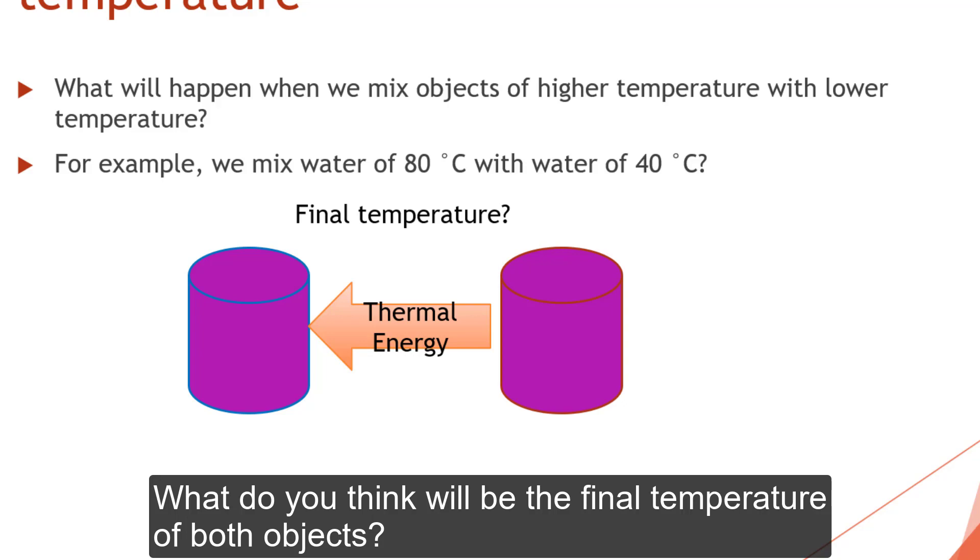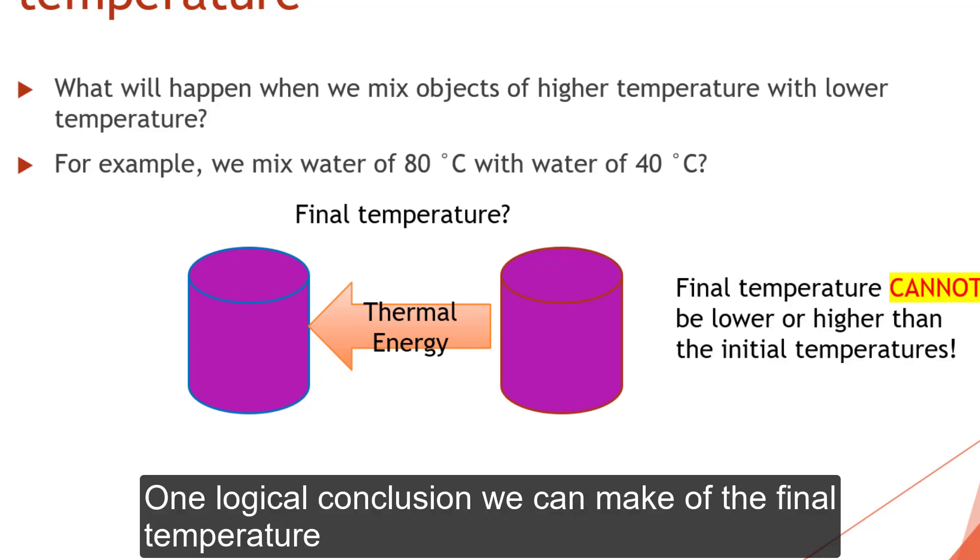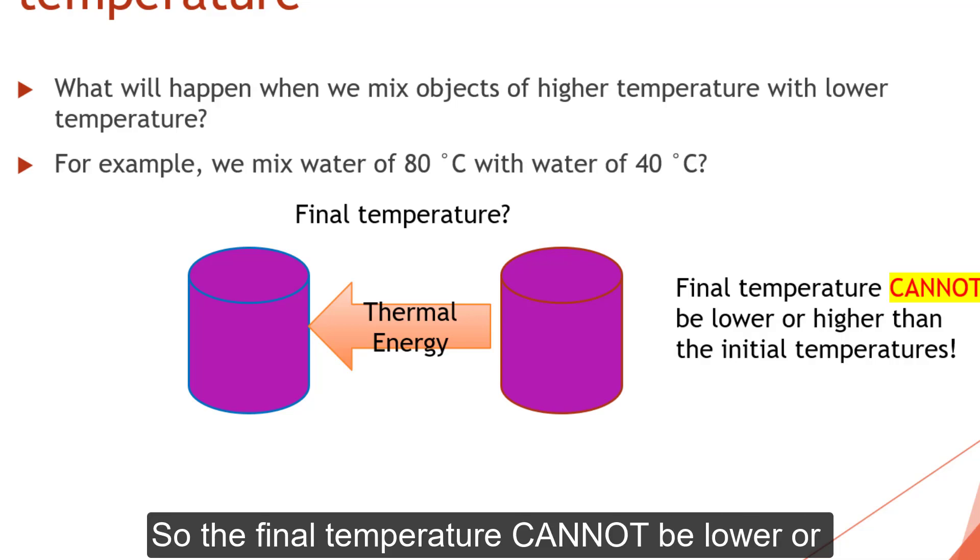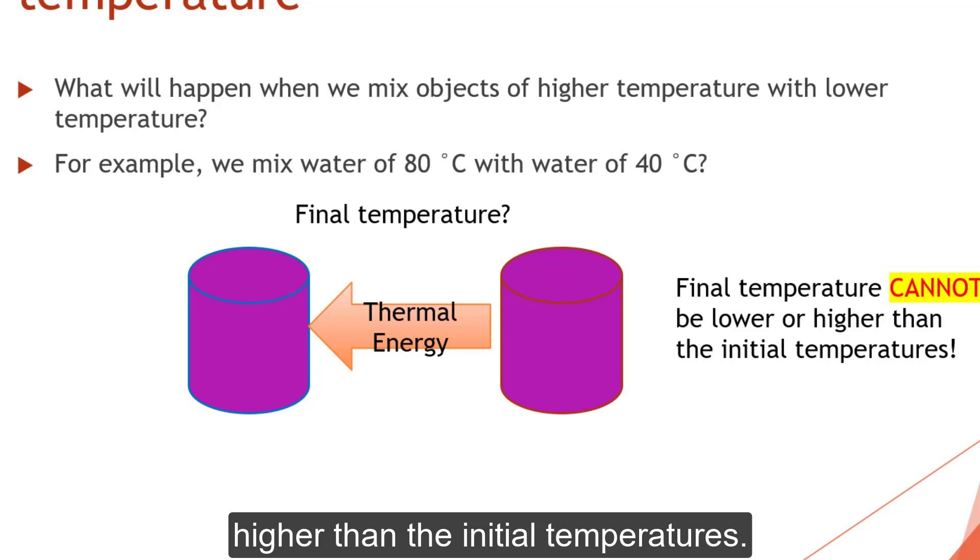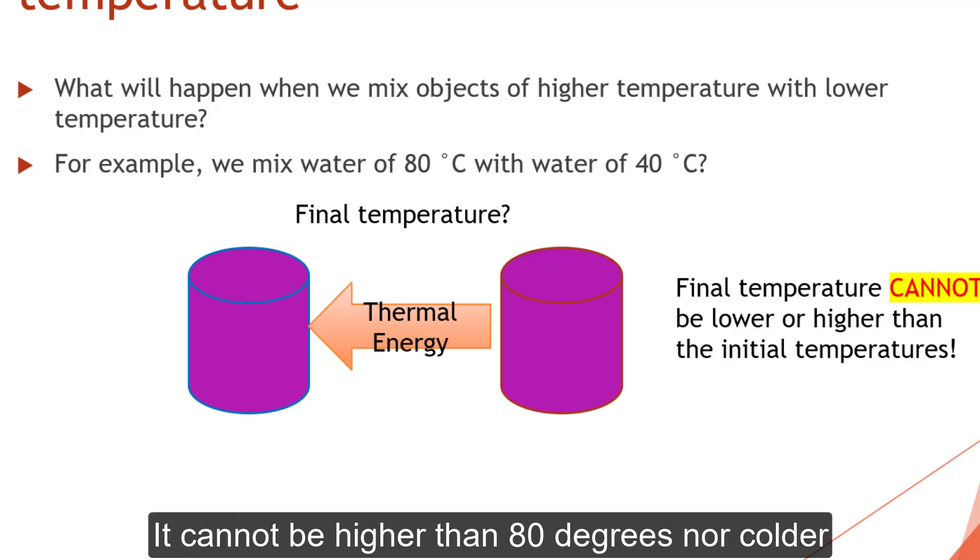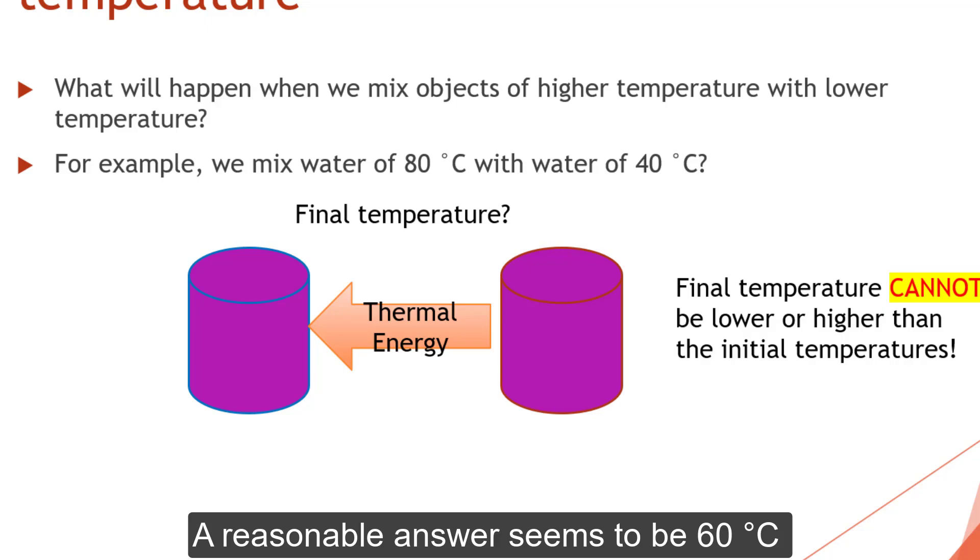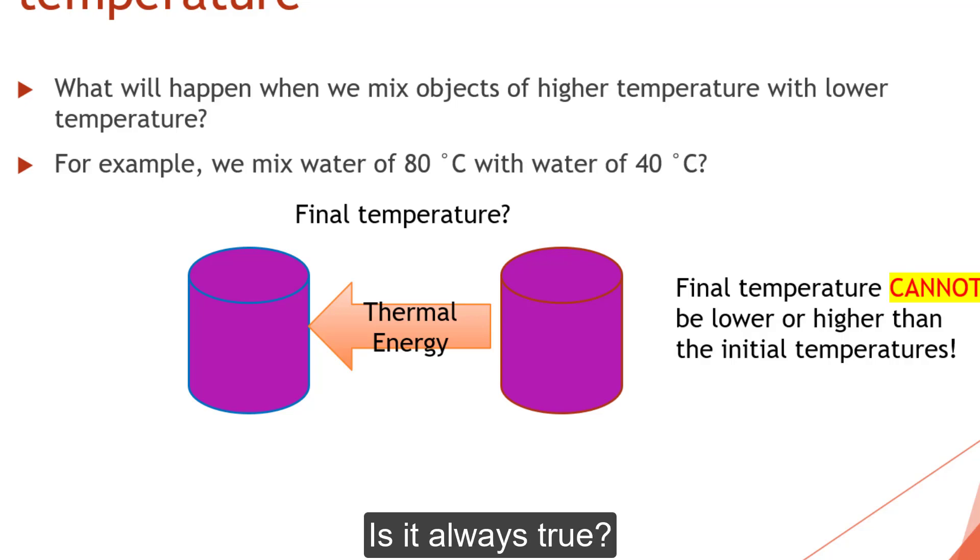What do you think will be the final temperature of both objects? One logical conclusion we can make is that the final temperature must be somewhere between the higher and lower temperature. So the final temperature cannot be lower or higher than its initial temperature. It means it cannot be higher than 80 degrees, neither can it be colder than 40 degrees Celsius. A reasonable answer seems to be 60 degrees Celsius as it is the middle of 40 and 80. But is it always true?